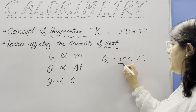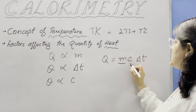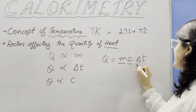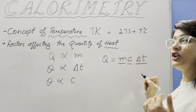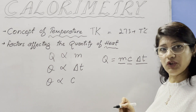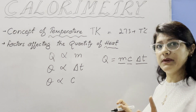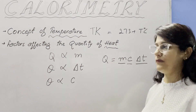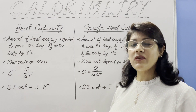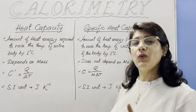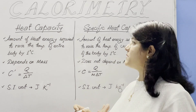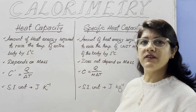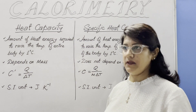Where M is the mass, C is the specific heat capacity, and delta T is the change in temperature — not just temperature, but the change in temperature. Now let us understand the difference between heat capacity and specific heat capacity.